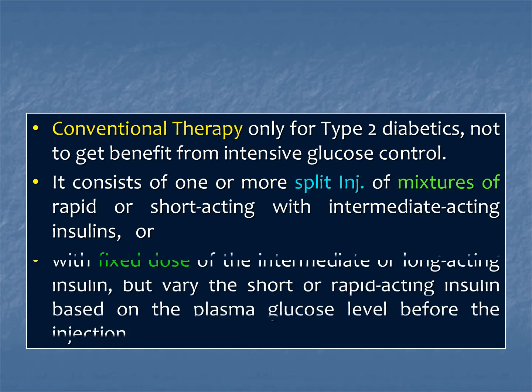Or we may use a fixed dose of intermediate or long-acting insulin, but vary the short or rapid-acting insulin based on the plasma glucose level before the injection. We fix the dose of the intermediate and long-acting, but vary the dose of short-acting or rapid-acting drug depending upon the plasma glucose level just before the injection.